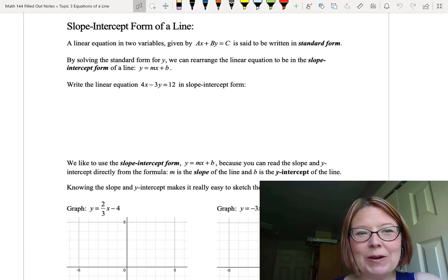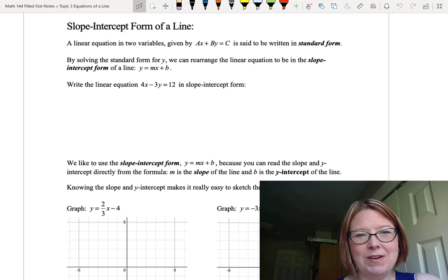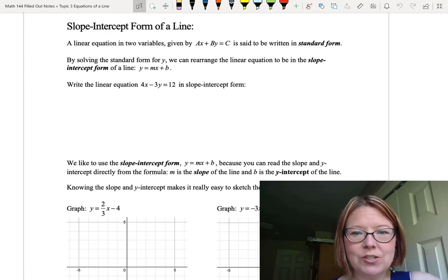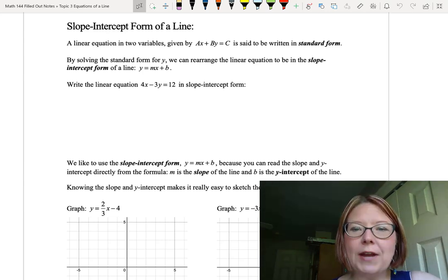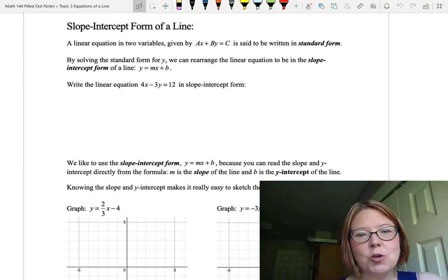In this video we're going to talk about the slope-intercept form of a line. We've already introduced the standard form of a line, which is ax plus by equals c. If we solve that standard form for y, we can rearrange it to be in the slope-intercept form, which would be y equals mx plus b. This is a lowercase m and a lowercase b.